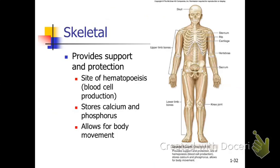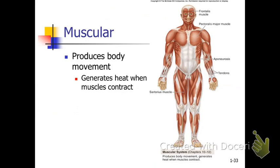Don't confuse the skeletal system with the muscular system. When you think of the skeletal system, think support, protection, and structure. Leave the movement of the body to the muscular system, because muscle is specialized in movement. It needs the bones as a set of levers, but the skeletal system is about protection, structure, and support — and muscles are about movement.